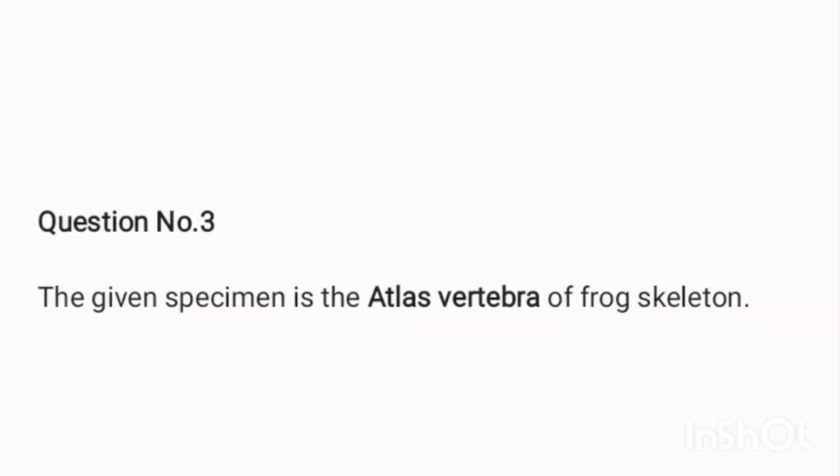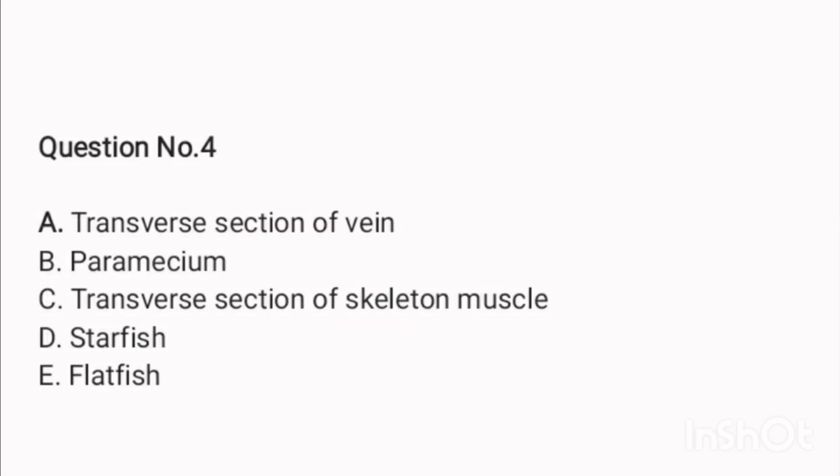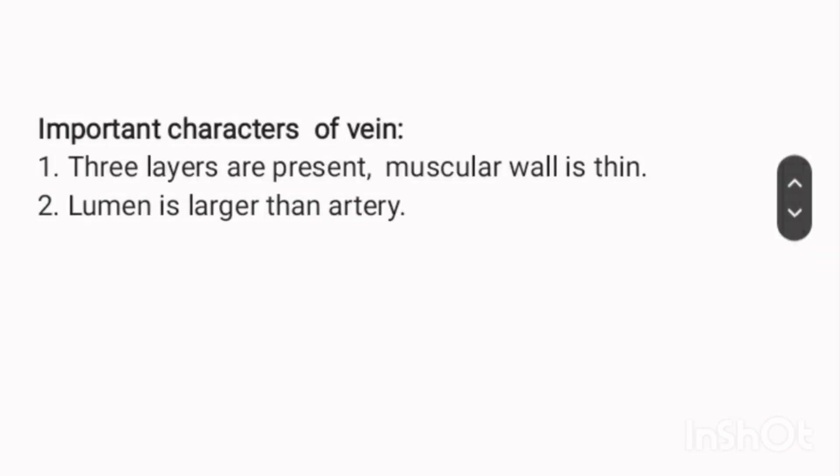Question number three: the given specimen is the atlas vertebra of a frog skeleton. Question number four covers: A) transverse section of vein, B) paramecium, C) transverse section of skeletal muscle, D) starfish, E) flatfish. Important characters of vein: one, three layers are present and the muscular wall is thin.